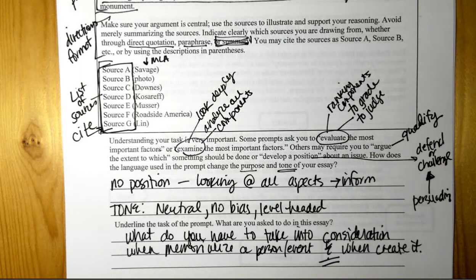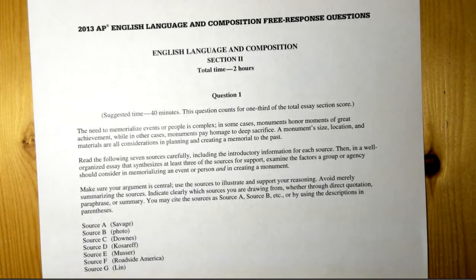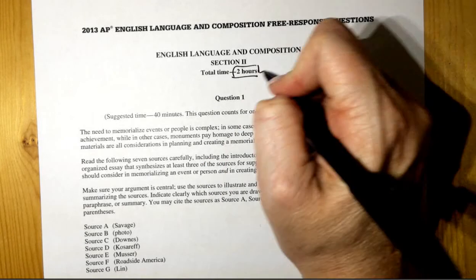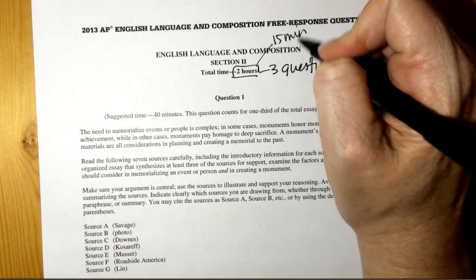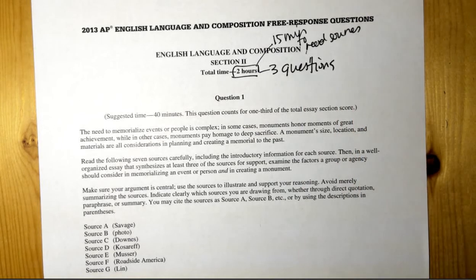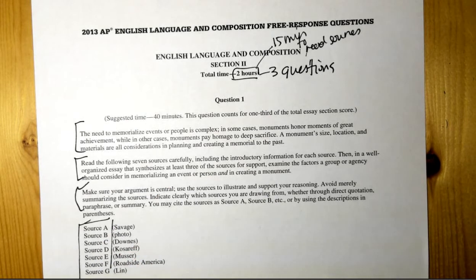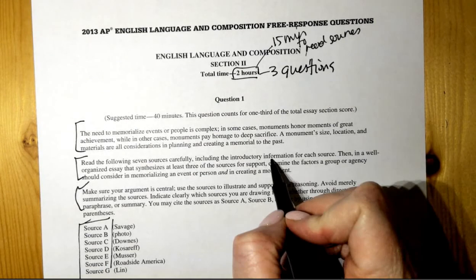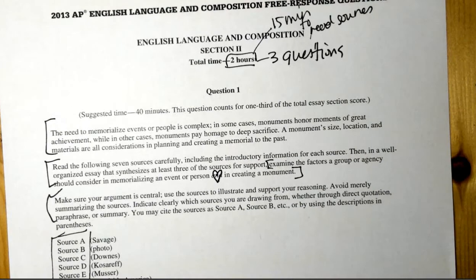So I think there's two things right what do you have to take into consideration when now there's two because it's an and when you do what when you memorialize a person or event and the things you have to take into consideration when what when you create it. Okay all right so now switch over to the other packet because I want to kind of show you how I would go through all of this on our actual document so this is what the actual prompt page the front page looks like okay.